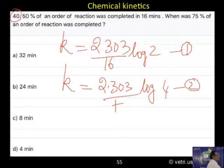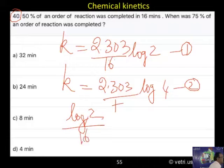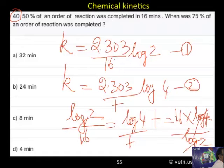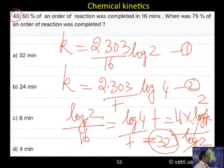So both you equate this, so log 2, log 2 by 16 T equal to log 4 by T, so T equal to 16 into log 4 divided by log 2, that means log 2 by 2, so 32 will be the answer, where is 32, it is A in the character.